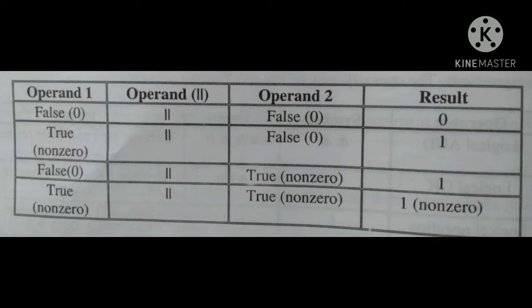OR (||) truth table also uses four columns: operand 1, OR symbol, operand 2, and result. False || False = 0. True || False = 1. False || True = 1. True || True = 1. In OR, only when both operand 1 and operand 2 are false does the result become 0; otherwise the result is 1.